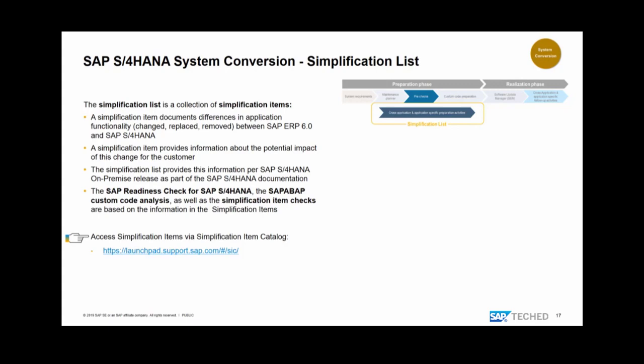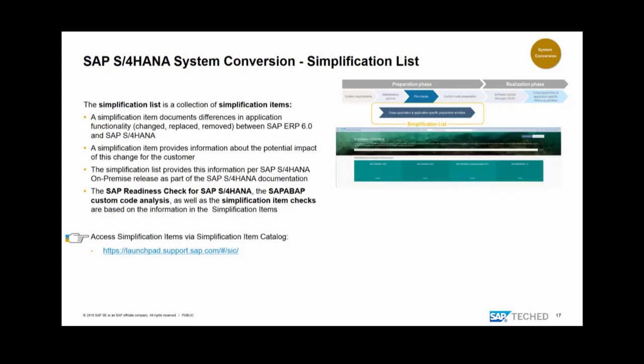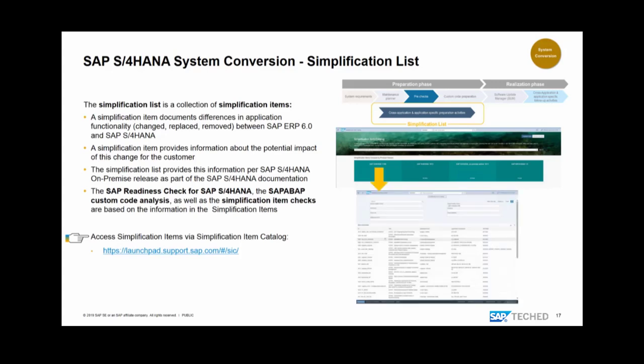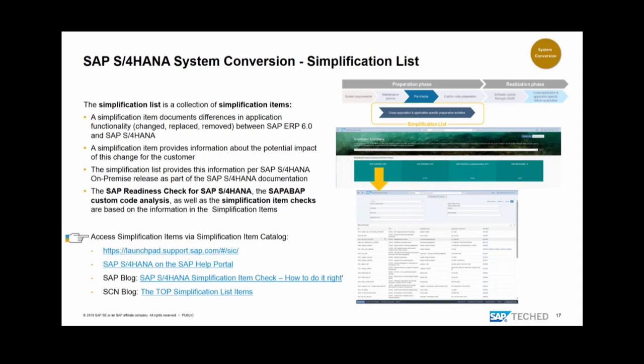In the catalog, items are grouped by target release, and you can get a list of items, do full text search, and set filters. The simplification list is also available on the SAP Help Portal. I've provided two blog links: one explaining the most common simplification items customers typically face, and one explaining how to work with the simplification item check — how to install it and manage your simplifications.